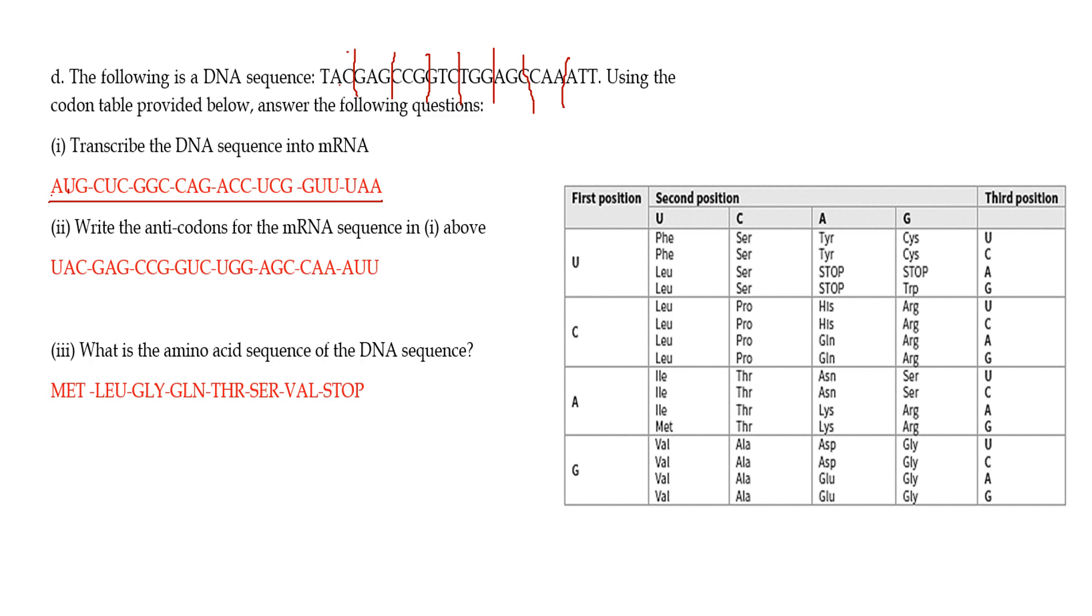Then write the anticodons for the mRNA sequence in i) above. You're basically taking that - because it's anticodons, you're basically writing out the tRNA. You still stick with A binding to uracil. You don't change it to thymine - there's no thymine in mRNA or tRNA.